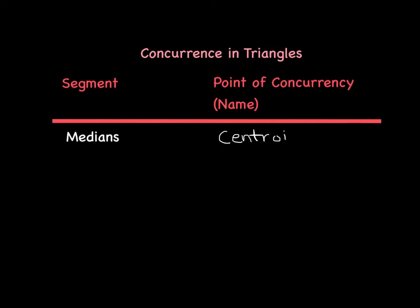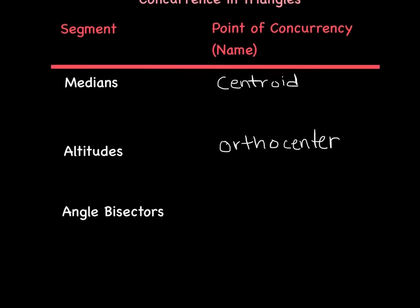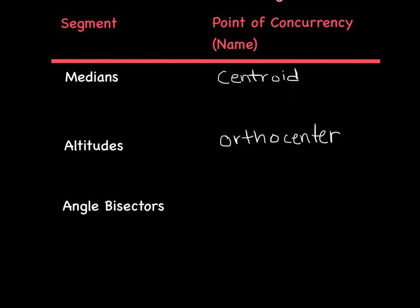The next is when the altitudes are concurrent. The concurrence of the altitudes is called the orthocenter. Next, we have concurrency of the angle bisectors. When the angle bisectors intersect, they are called the incenter.